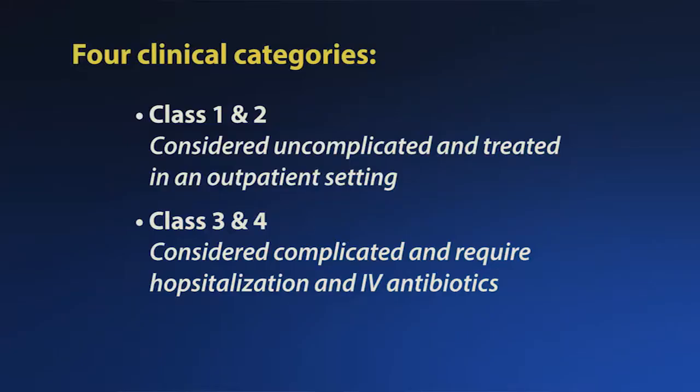Cellulitis is classified into four clinical categories. Class 1 and 2 are considered uncomplicated and can generally be treated in an outpatient setting. Class 3 and 4 are considered complicated and require hospitalization for intravenous antibiotics or referral to the Geisinger at Home Program. Class 1 and 2 generally have no signs of systemic toxicity and have no uncontrolled comorbidities such as diabetes, and can usually be managed with oral antimicrobials.